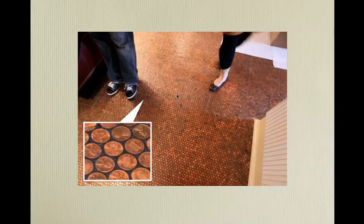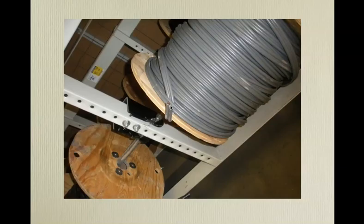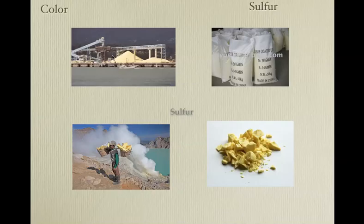Color isn't always reliable. These are all quartz — the same mineral can be many different colors. Here is quartz again in many different colors. Here is fluorite — fluorite can appear in many different colors.